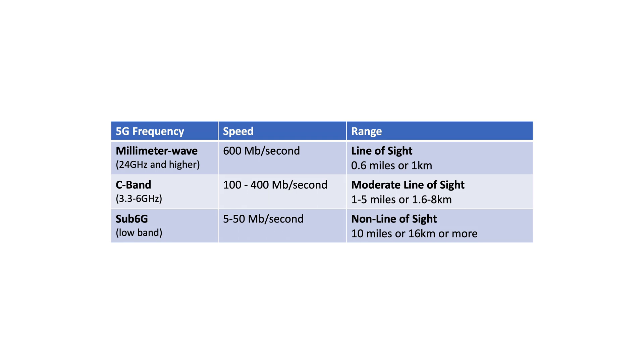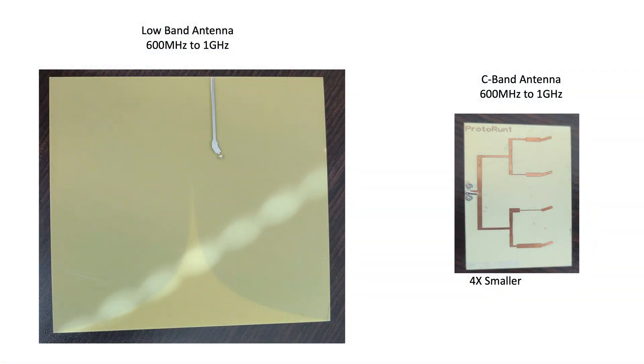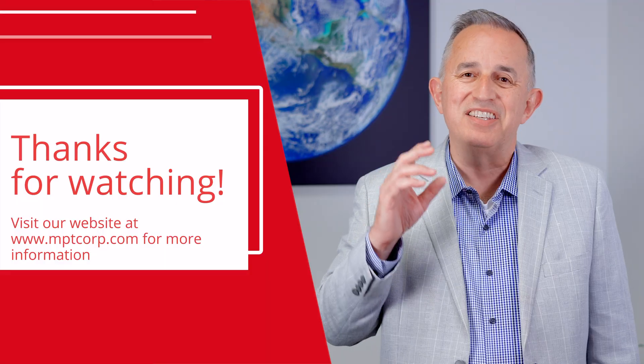Another reason C-Band is attractive is that, all things being equal, the antennas can be smaller compared to the low bands. This is simply due to physics — lower frequencies have longer wavelengths, which means bigger antennas. In fact, C-Band antenna elements can be one-third to one-fourth the size of the low band antennas.